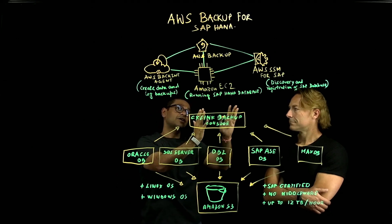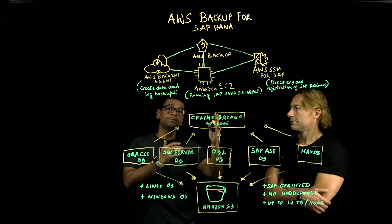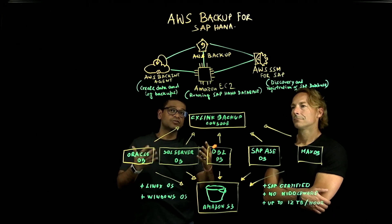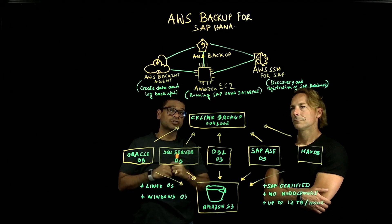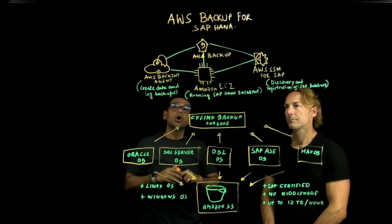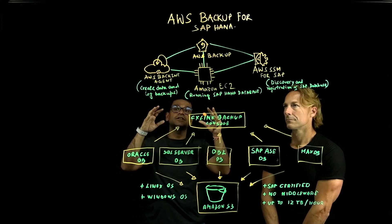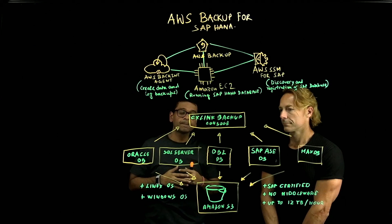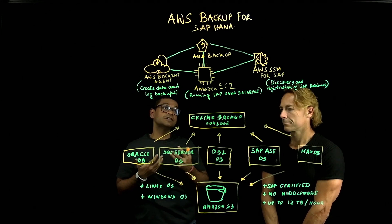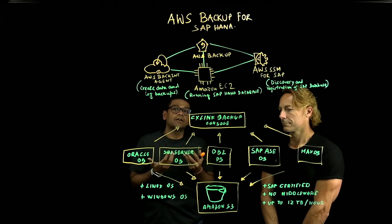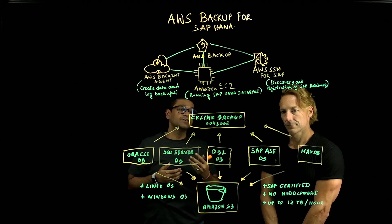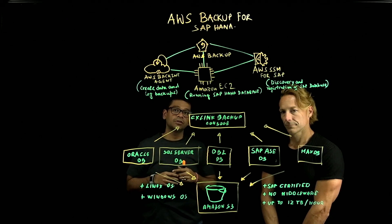On the right side is AWS SSM for SAP — Systems Manager — which runs and keeps track of the Amazon EC2 instances and EC2 resources where the SAP HANA databases are installed. When you use the Systems Manager console, the SSM console, you can view operational data and automate operational tasks, like scheduling your backups and setting up recurring backup tasks for your SAP HANA databases.